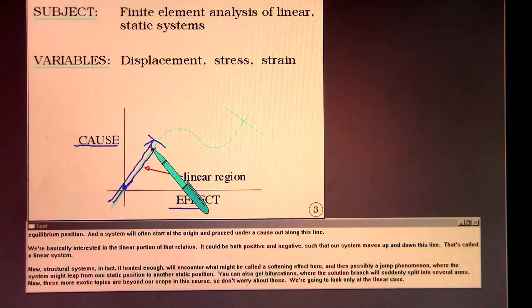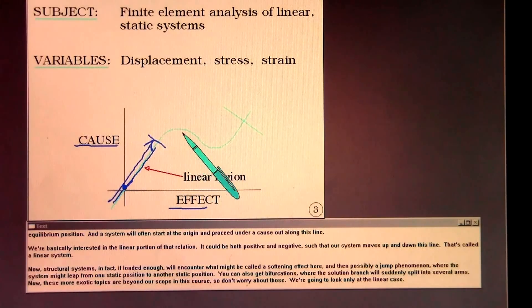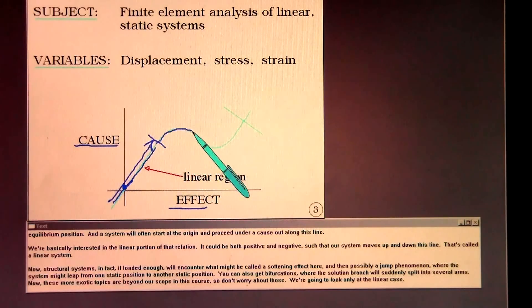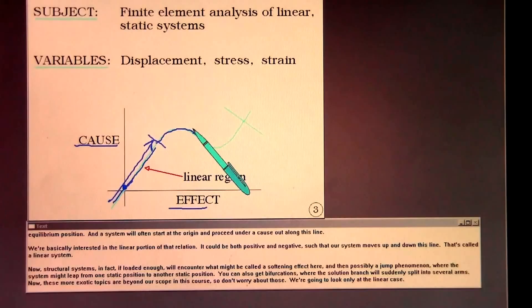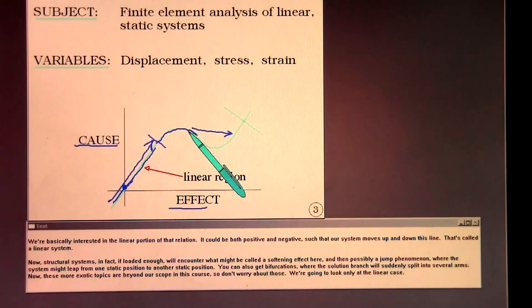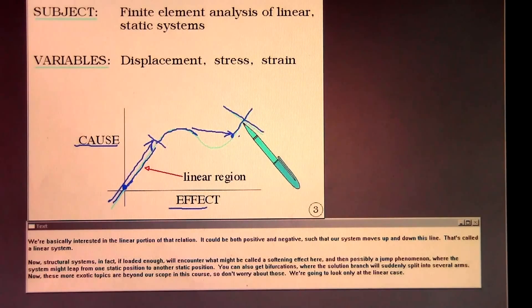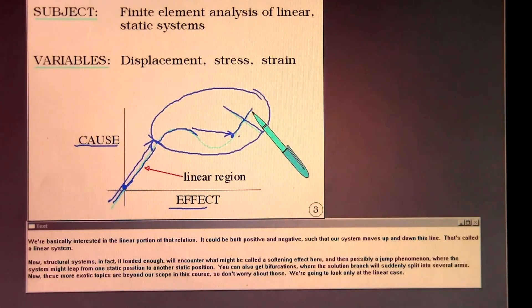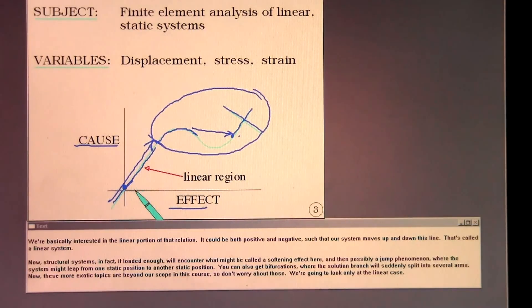That's called a linear system. Structural systems, in fact, if loaded enough, will encounter what might be called a softening effect here, and then possibly a jump phenomena where the system might leap from one static position to another. You can also get bifurcations where the solution branch will suddenly split into several arms. These more exotic topics are beyond our scope in this course, so don't worry about those. We're going to look only at the linear case.